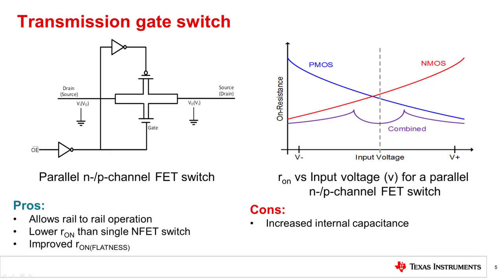When enable OE is low, V_G in the NMOS-PMOS parallel switch is VCC, and signals ranging from 0V to VCC can be passed through the switch. The graph shows the general shape of R_on versus V_I for a typical NMOS-PMOS parallel switch as well as the individual NMOS and PMOS characteristics. Note that the exact shape of the R_on versus V_I curve may vary depending on the NMOS and PMOS structures. The disadvantage of this switch is that input and output capacitances increase due to the additional source and drain area of the combined transistor.